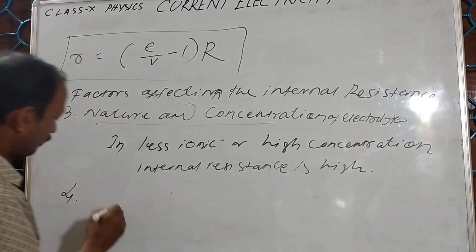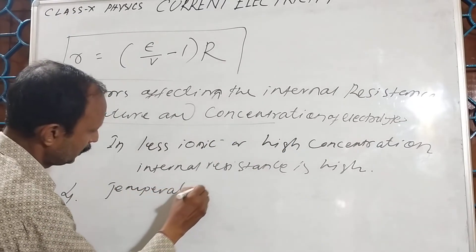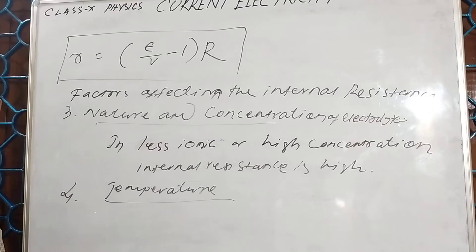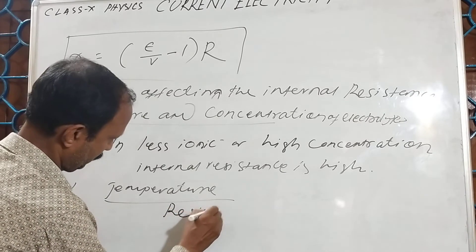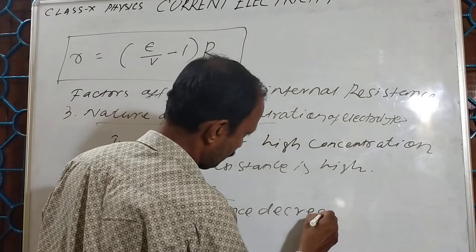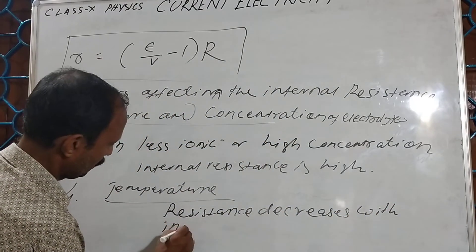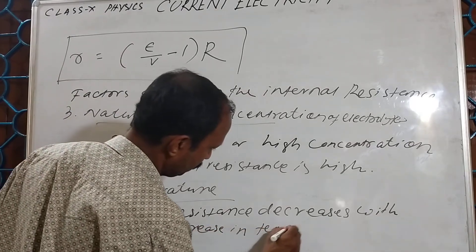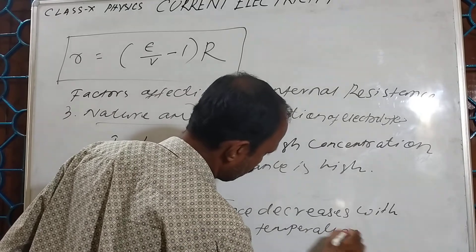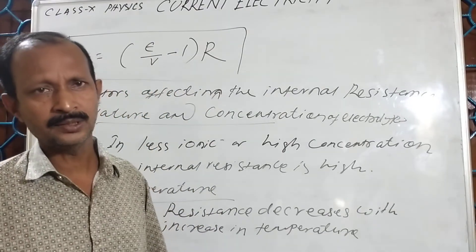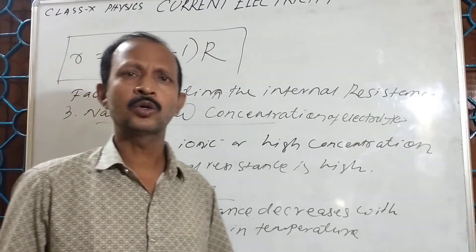The fourth factor is temperature. If the temperature increases, the particles start to move with higher speed, so resistance decreases. We can say that internal resistance decreases with increasing temperature. This covers the topic of internal resistance.